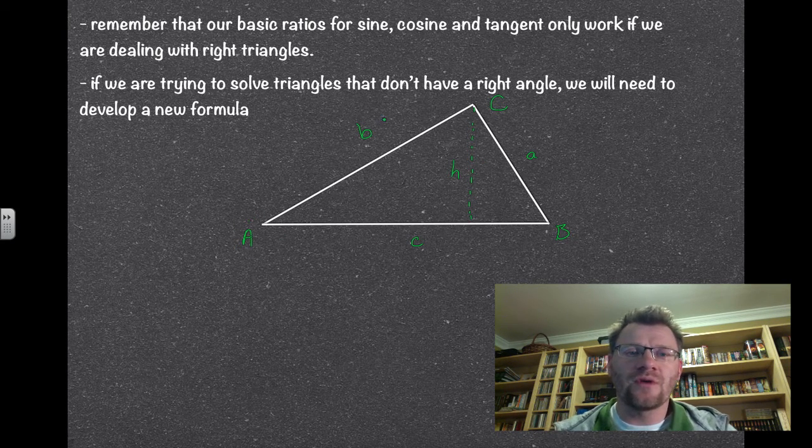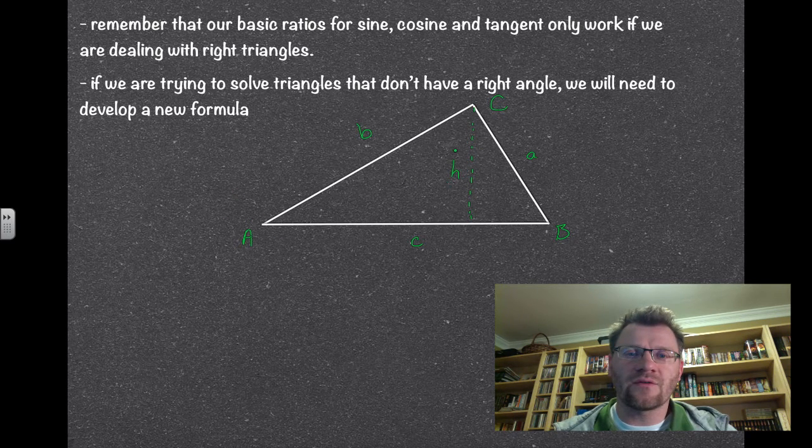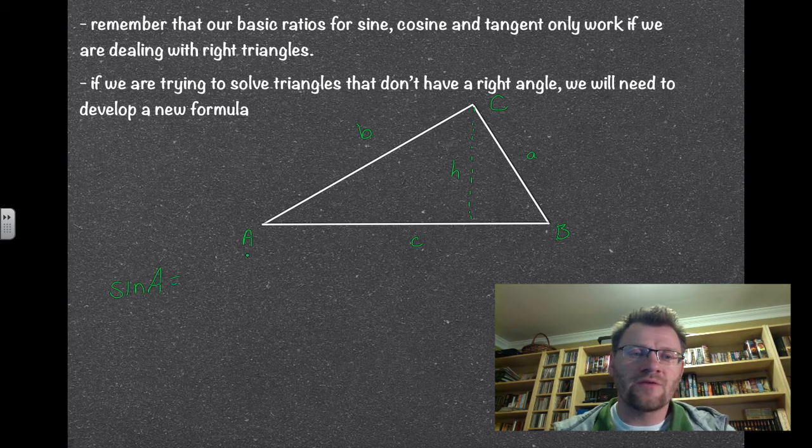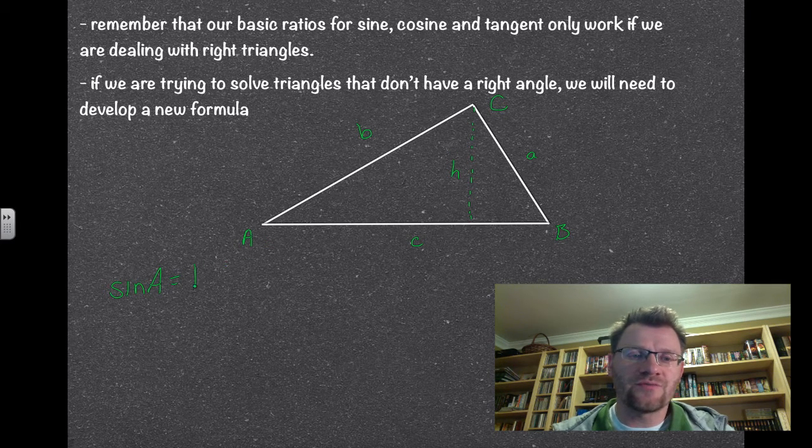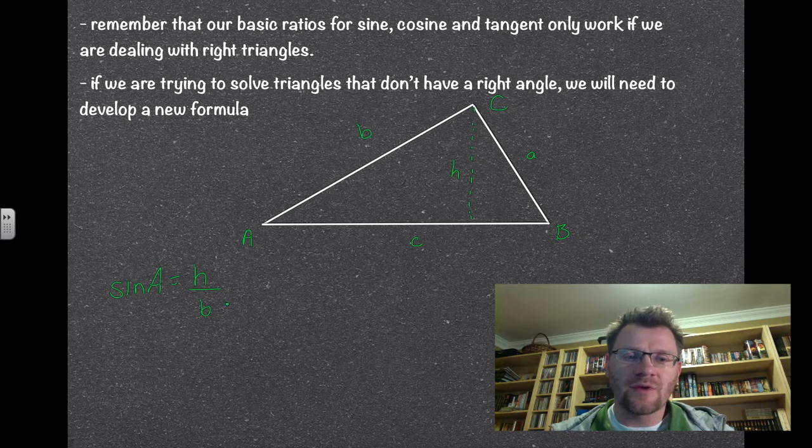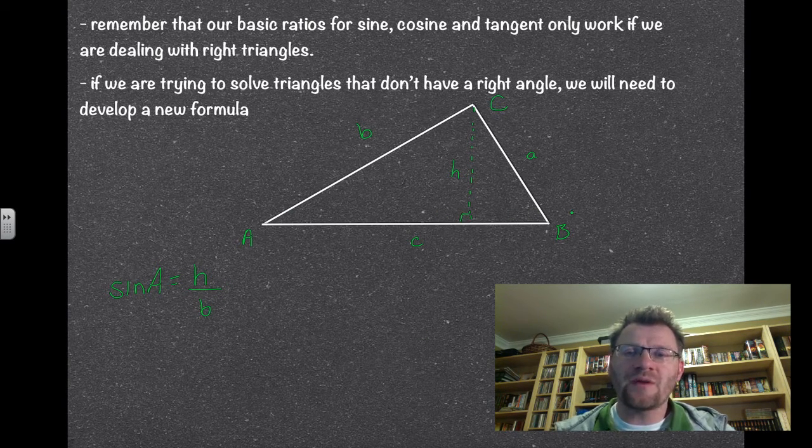I'm going to use sine to describe h. If I say sine a, that is equal to my opposite side, which is h, over my hypotenuse, which happens to be b, because the height makes a right triangle.